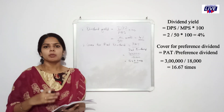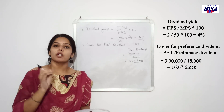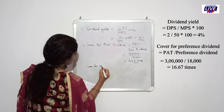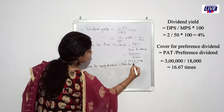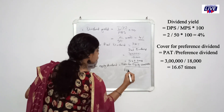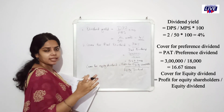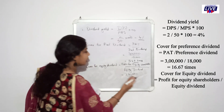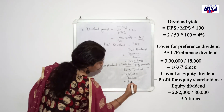Cover for equity dividend. Formula: profit available for equity shareholders divided by equity dividend. Profit available for equity shareholders equals profit after tax minus preference dividend. Cover for equity dividend equals profit for equity dividend. Profit for equity shareholders: 3 lakh minus 18,000 equals 2,82,000. Equity dividend: 4 lakh at 20% equals 80,000. 2,82,000 divided by 80,000 equals 3.5 times.